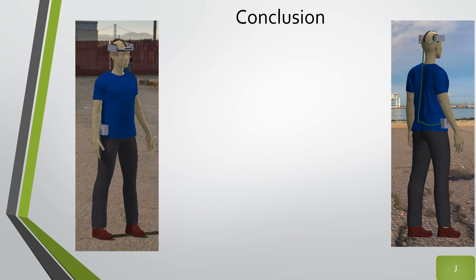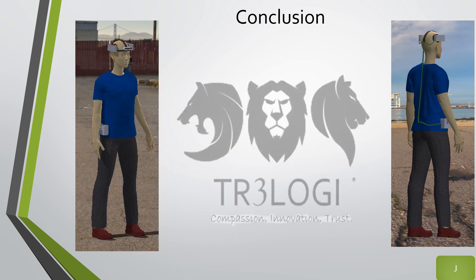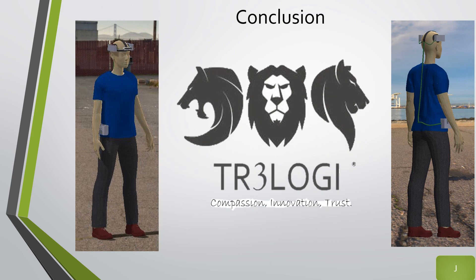It is scientifically proven that the blind and visually impaired have a superior sense of touch and spatial awareness. Our team is taking advantage of this heightened sense to give the blind a way to navigate with precision and a new sense of freedom. Here at Trilogy Engineering, we recognize that the only way to move forward as a society is to ensure that all members of our population, despite their differences, can live a free, independent, and happy life. Trilogy Engineering: Compassion, Innovation, Trust.